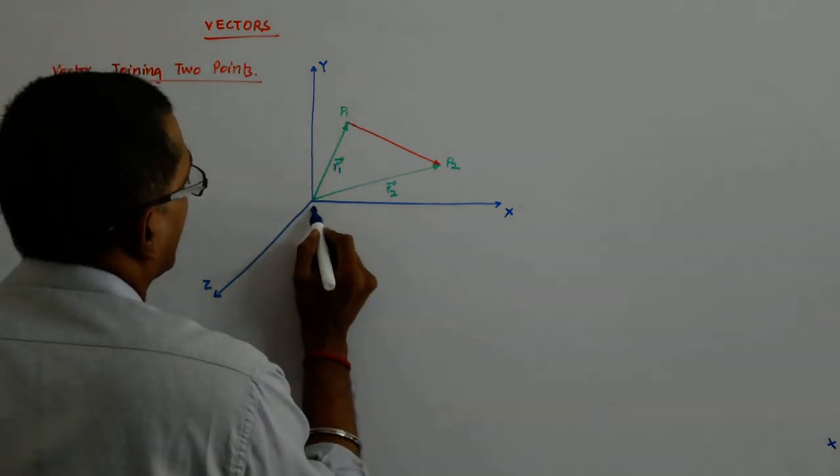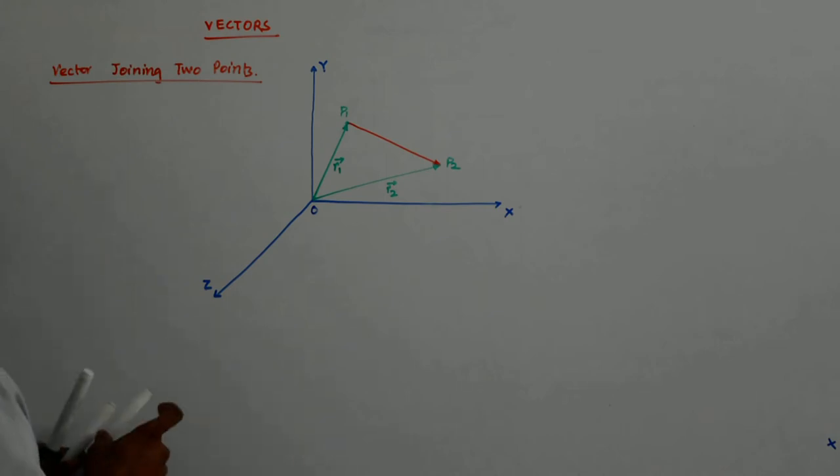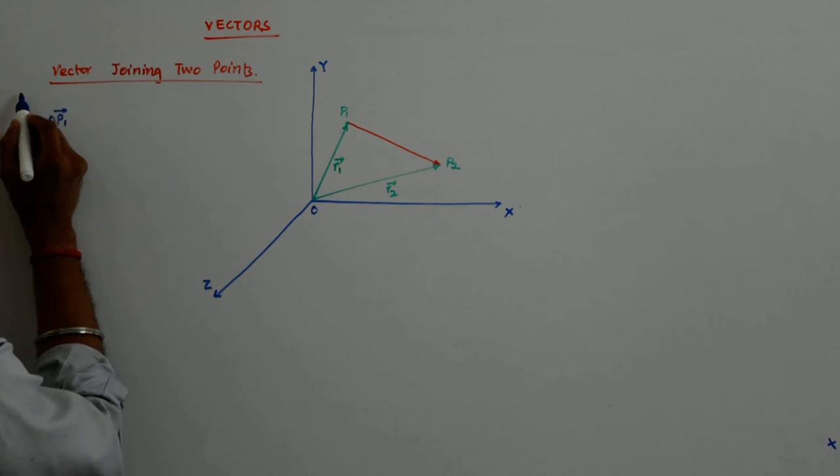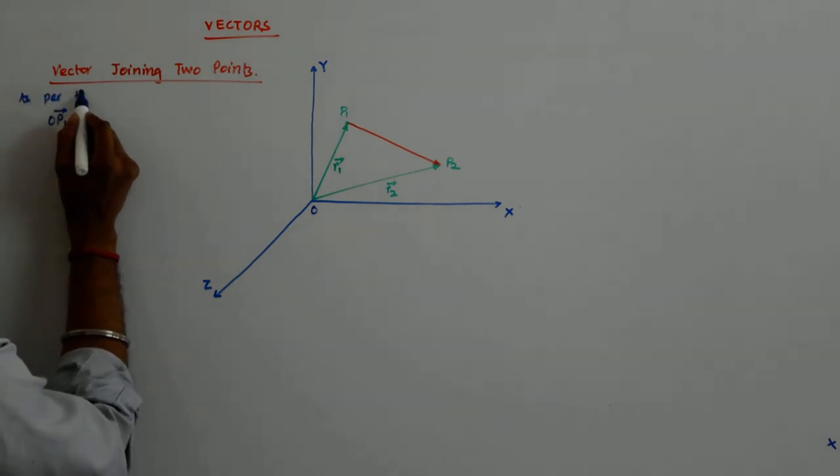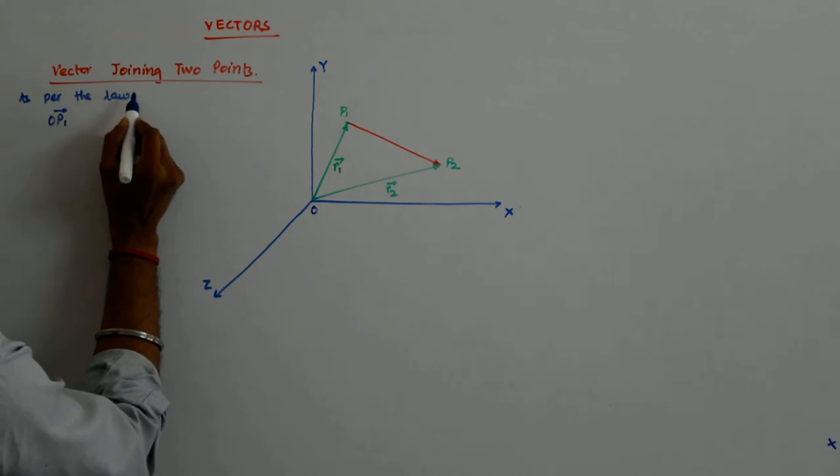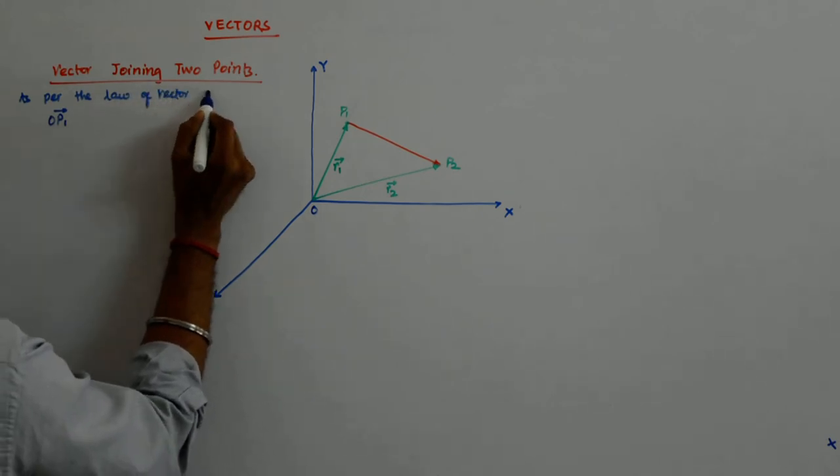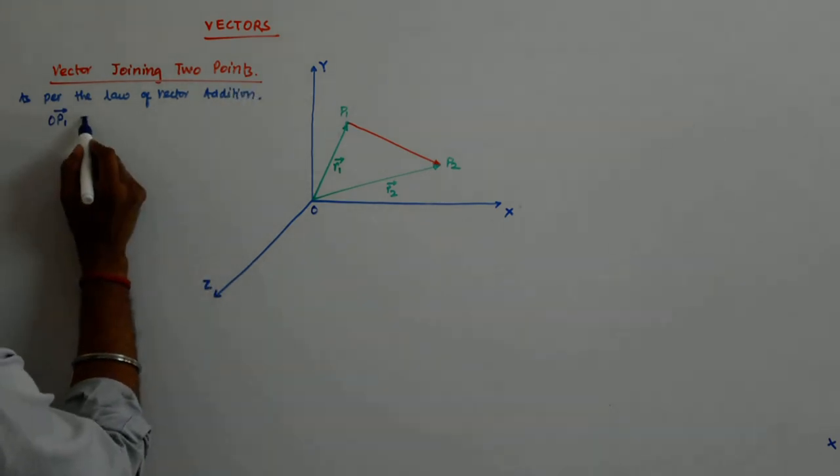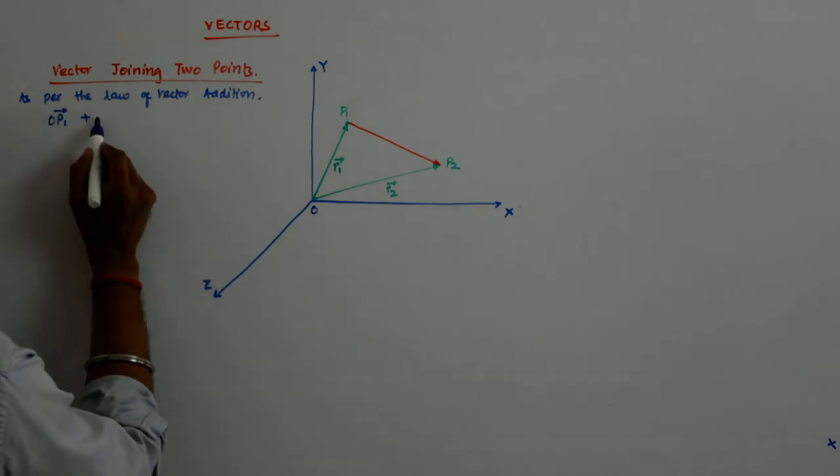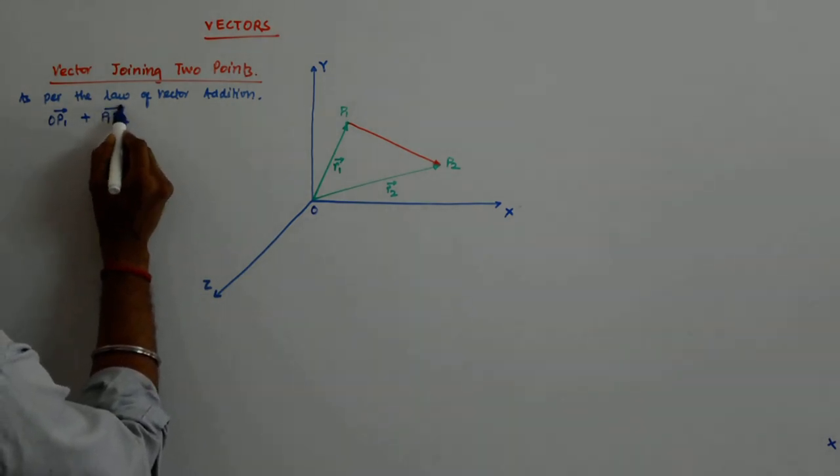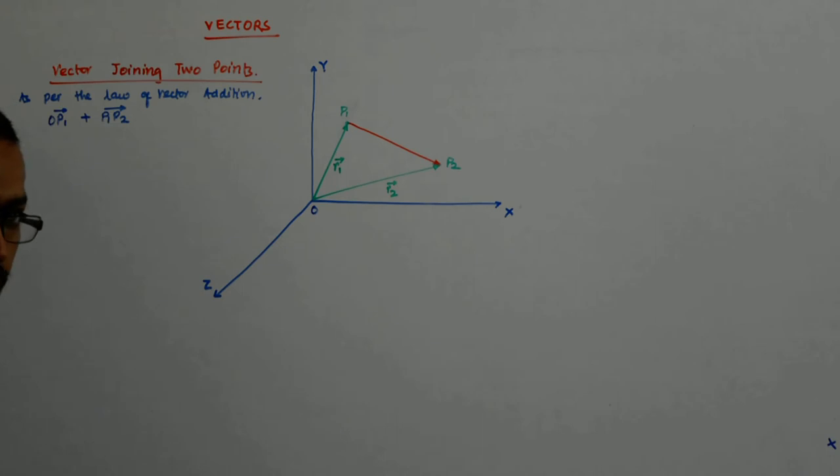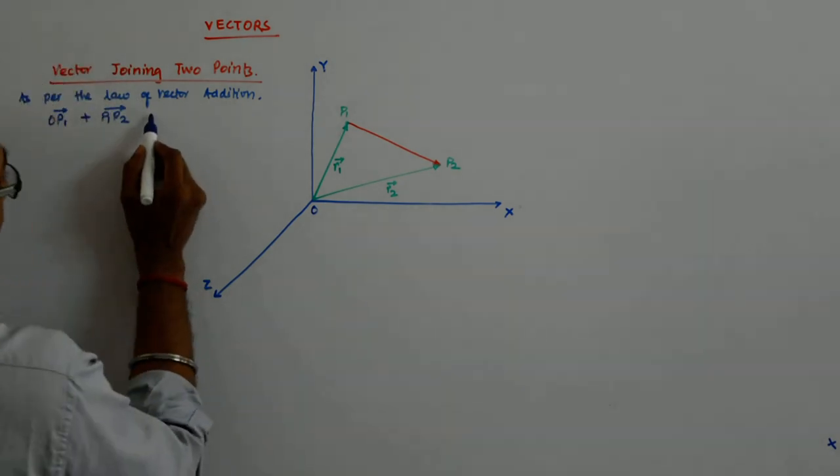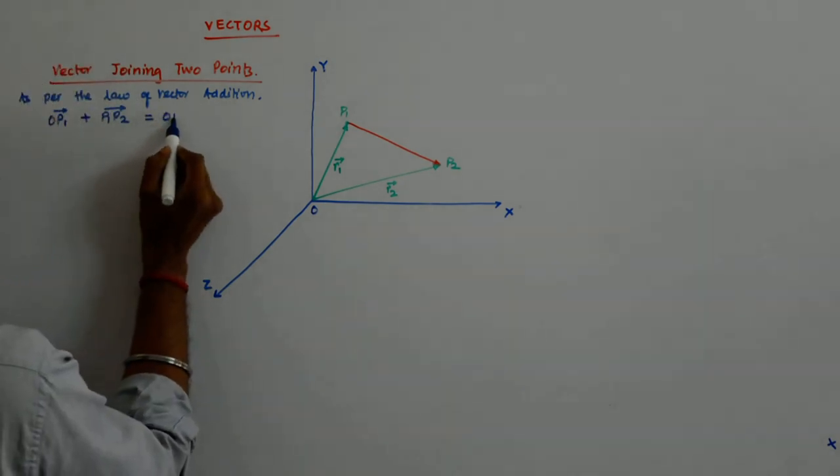OP1, P1P2. OP1 and P1P2. So I can very well see that OP1 according to as per the law of vector addition, I can see that OP1 plus P1P2 gives me OP2. Is it not?